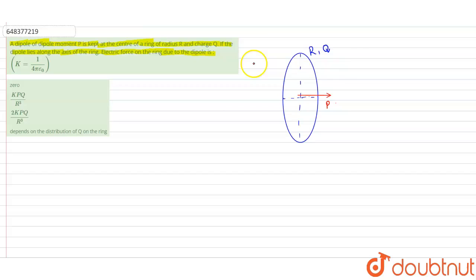So we have to find the electric force on the ring due to the dipole. This distance will be r and we know if this is a dipole at distance r from here.